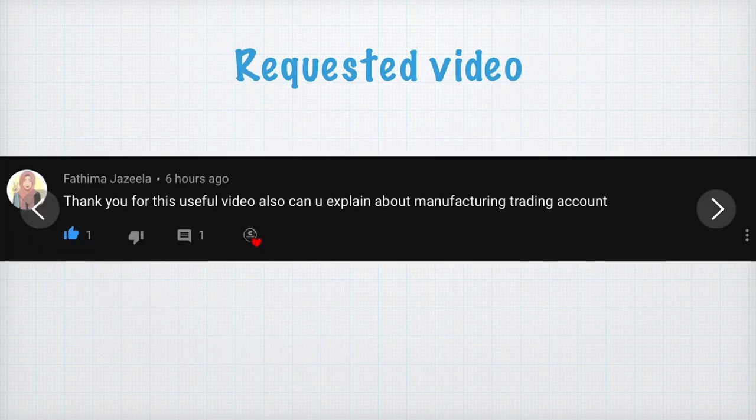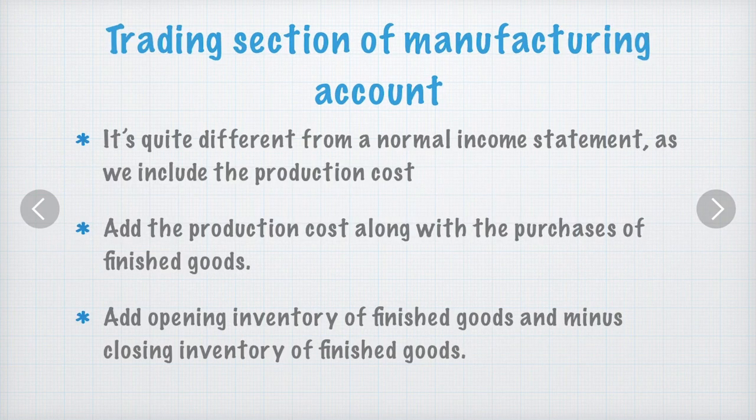Please do subscribe and like. This video has been requested by Fatima Jazila for explaining the Manufacturing Trading Account section. The trading section of a manufacturing account is quite different from a normal income statement, as we have to include the production cost found after constructing the manufacturing account. We add the production cost along with purchases of finished goods, plus the opening inventory of finished goods, minus the closing inventory of finished goods.